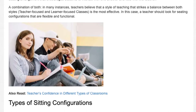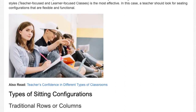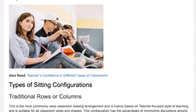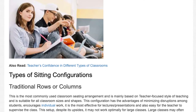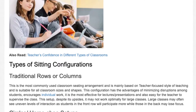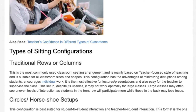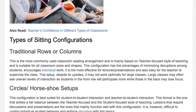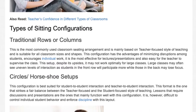Types of seating configurations. Traditional rows or columns: this is the most commonly used classroom seating arrangement and is mainly based on a teacher-focused style of teaching. It is suitable for all classroom sizes and shapes. This configuration has the advantages of minimizing disruptions among students, encouraging individual work, being the most effective for lecture presentations, and being easy for the teacher to supervise the class.